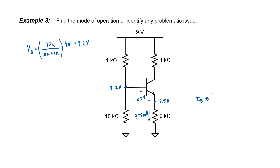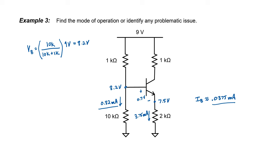Let's estimate my base current by assuming that beta is 100 and dividing 3.75 by 100. Knowing now a guess for my base current, I can go back and see whether it was appropriate to neglect it. The current flowing through this resistor is given by 8.2 divided by 10,000 — I get 0.82 milliamps. Comparing this with my base current, I think it was negligible — we're at least a factor of 10 off. It means that my 8.2 volts at the base is a reasonably accurate estimate. So this transistor is not in the cutoff mode and is either in the forward active or the saturation mode.